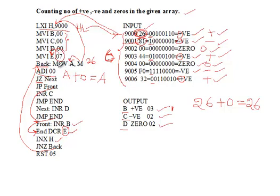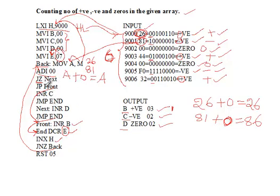Back at BACK, MOV A,M now loads 81 from address 9001. Adding 00 gives 81. It is not zero, so JZ doesn't trigger. It is also not positive (MSB is 1), so JP doesn't trigger. Instead, we fall through to increment C — the negative counter — by 1. Then JUMP END decrements E and increments HL. Next iteration loads 00 from 9002; 00 plus 00 is 00, so JZ triggers and D is incremented by 1.